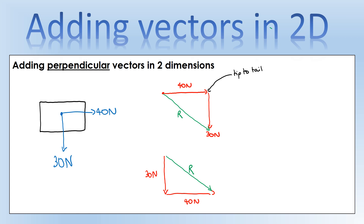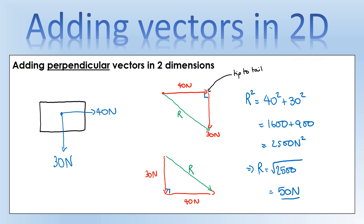Now we can calculate what the resultant is. The key is that we have right angle triangles, which means we can use Pythagoras' theorem. So the resultant squared equals 40 squared plus 30 squared, which is 1600 plus 900, giving 2500 newton squared. Square rooting that gives a resultant of 50 newtons. That's what happens when we add 40 newtons to 30 newtons when they're at 90 degrees to one another.